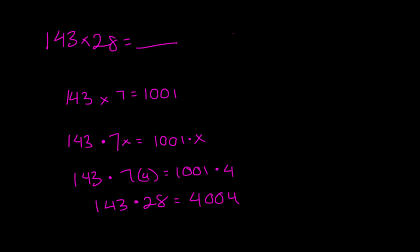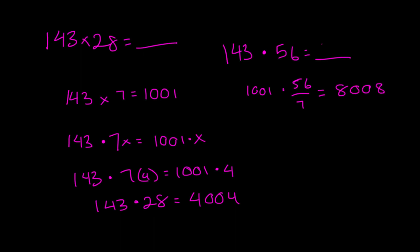Let's take another example. 143 — I'm going to use the dot here for multiplication again — times 56 would just be 1001 times 56 divided by 7, or it would be 8,008.